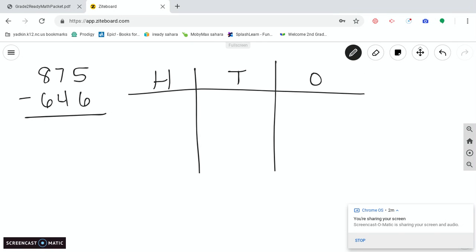When we were adding three-digit numbers, we have to draw both numbers so we can add them together. But when we're subtracting, we only draw the bigger number so that we can take away the smaller number. And our bigger number is 875.